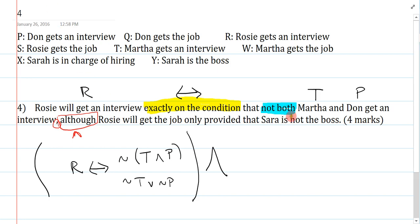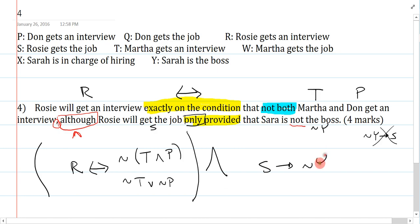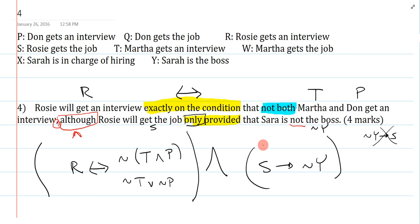Now I can symbolize the right conjunct. And notice symbolizing the right conjunct has nothing to do with symbolizing the left. Rosie will get the job only provided that Sarah is not the boss. So, what's the symbol for Rosie will get the job? S. What's the symbol for Sarah is not the boss? Not Y. Now, again, if the only is not here, this would say provided that Sarah is not the boss, Rosie will get the job. Which is not Y arrow S. But once I insert the only, that's not the way. It's actually S arrow not Y. I put those in brackets to preserve the and as the main connective. So, at first glance, this seems like a hard question. There's lots of parts and all these things. But once you realize that it's just an and, you can just treat each conjunct totally separately and the symbolization is quite easy.